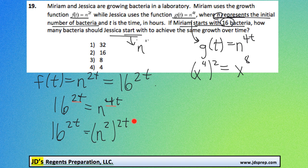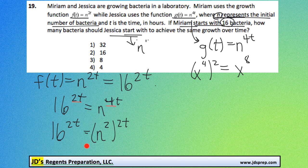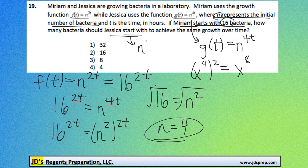Now again, the reason we did this is so that we have the same exponent here and here. That means these two bases must also be equal to each other. 16 and n squared must be the same. So we'll square root both sides, and we'll get that n should equal 4.